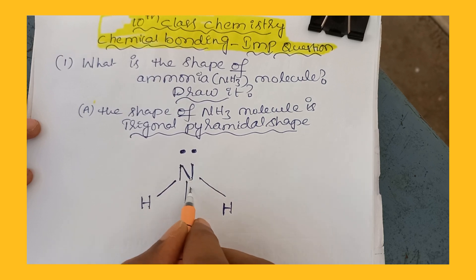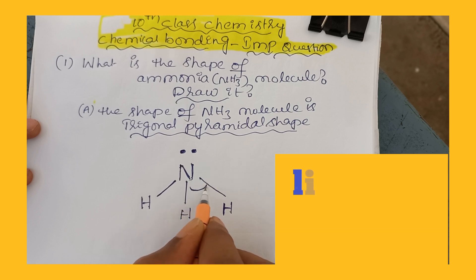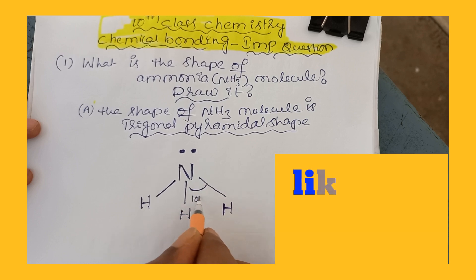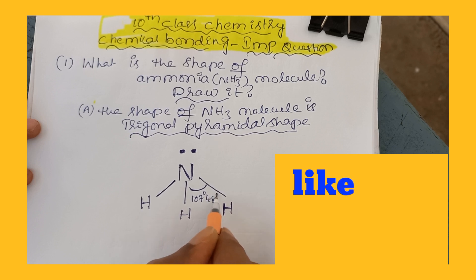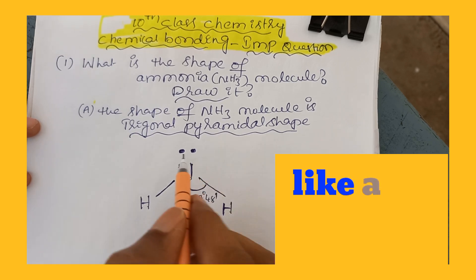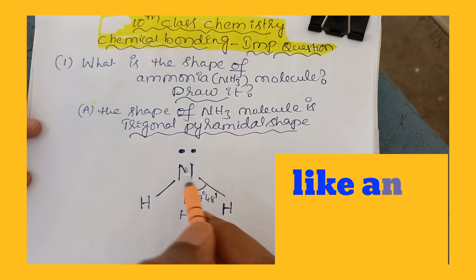Now bond angle between the two bonded atoms is 107 degrees 48 minutes. So this is a lone pair of electron.